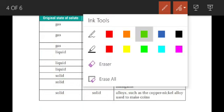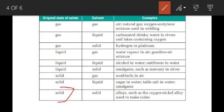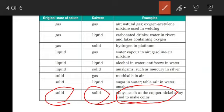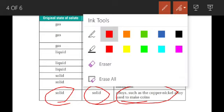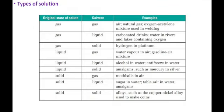The last type is solid as solute and solid as solvent. The best example of this kind of solution is an alloy. Alloy is a homogeneous mixture of two solids. For preparation of alloys, two metals, or one metal and one non-metal, are mixed together to form a homogeneous mixture called an alloy. All these are the types of solutions.